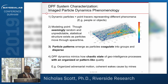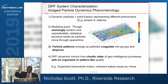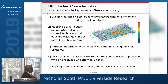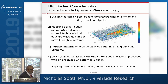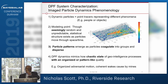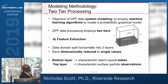The particle patterns emerge as particles come together and then disperse, very much like how people do. When we look at adversaries from the satellite position, we see them come together and disperse, just like particles in a turbulent domain. DPF dynamics mimics how chaotic geo-intelligence processes have an organized, pattern-like quality, which may lend insight into adversarial behavior. Fluid turbulence is not crowd turbulence, but the tools may be very applicable to both regimes.